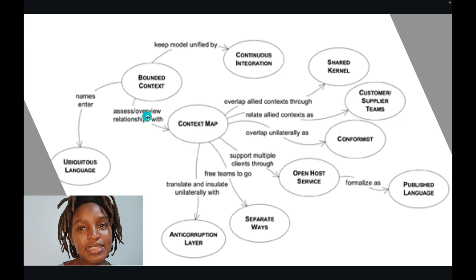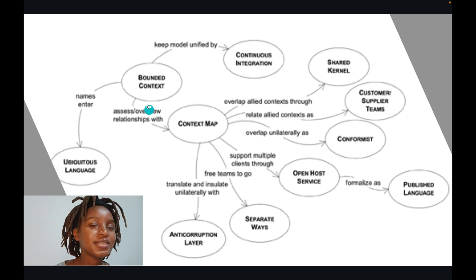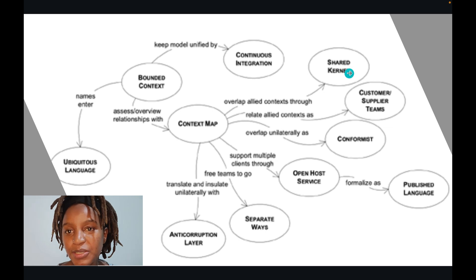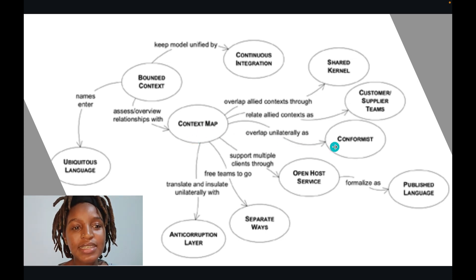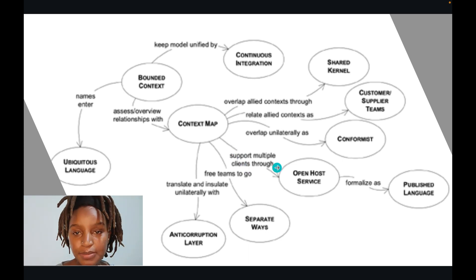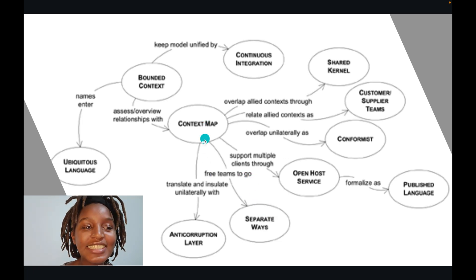Let's look at the illustration of context mapping from the blue book by Eric Evans. A bounded context assesses overview relationships with a context map. Bounded contexts keep the model unified using continuous integration. Context map names enter the ubiquitous language. Context map overlaps relate contexts through shared kernel, or as customer-supplier, or unilaterally as conformist. Context map supports multiple clients through open host service, formalized as a published language. Context map frees teams to go separate ways.